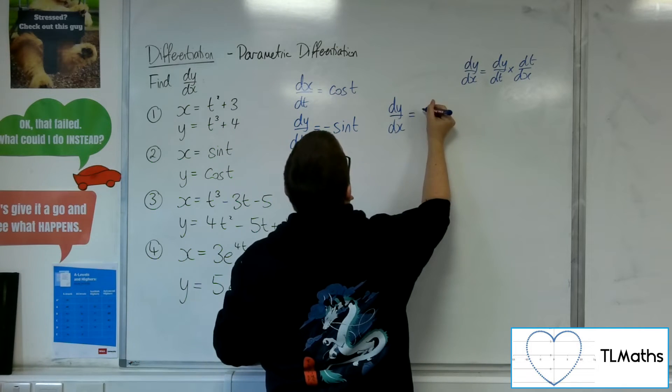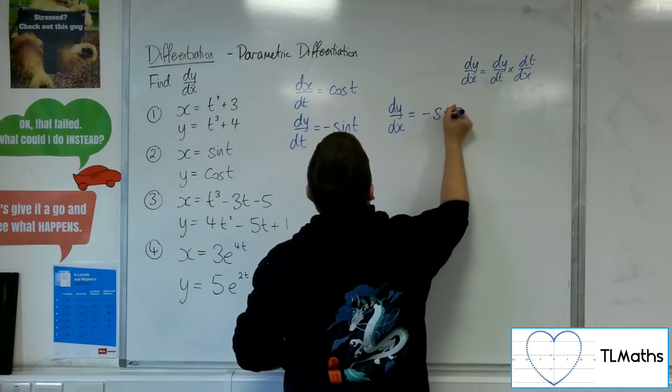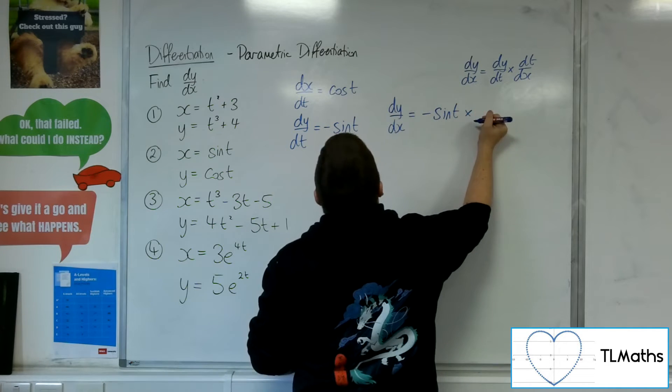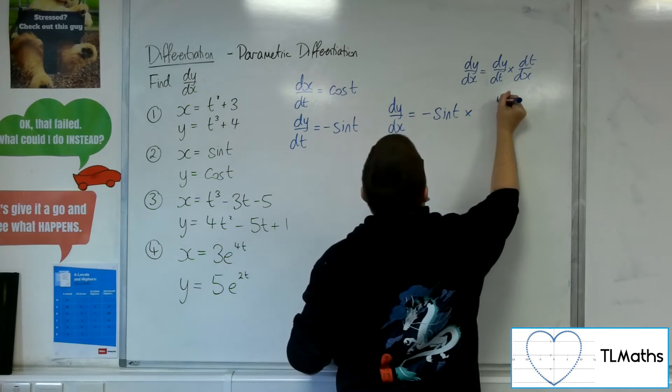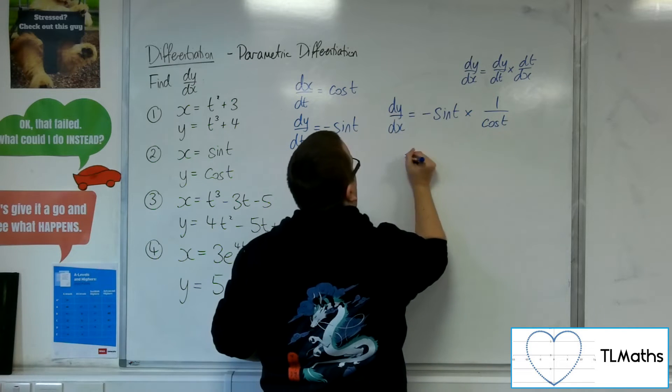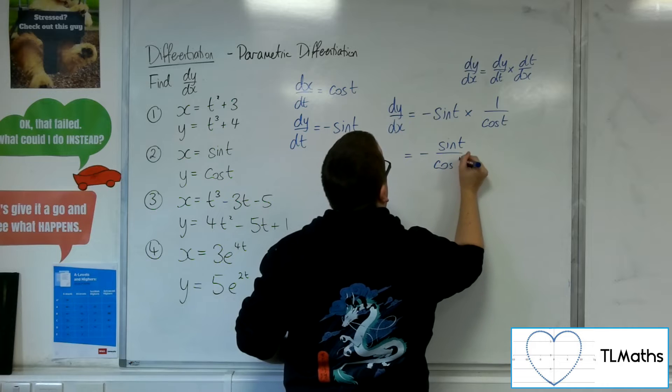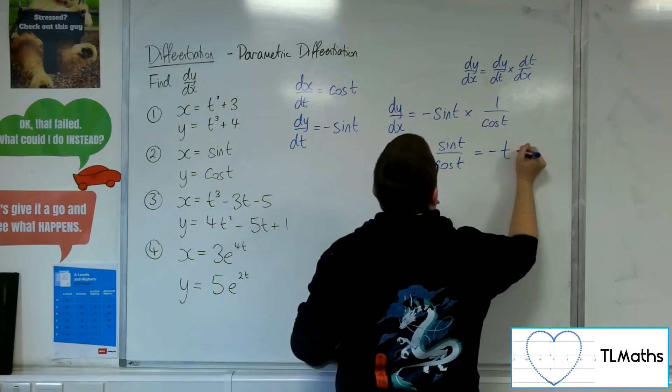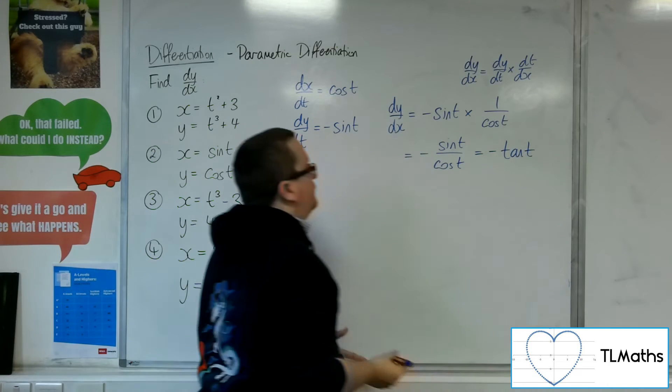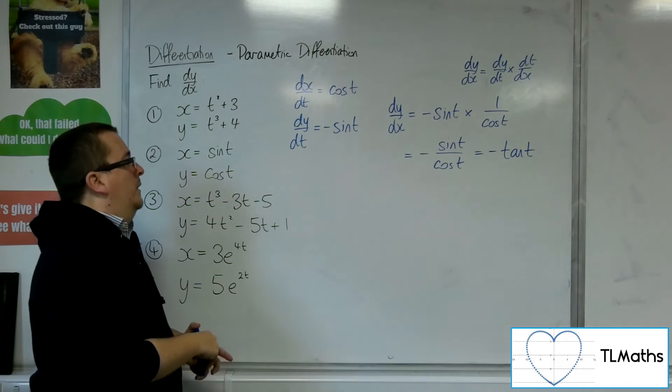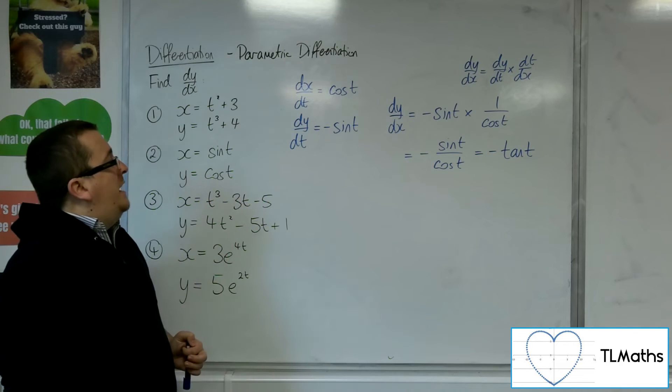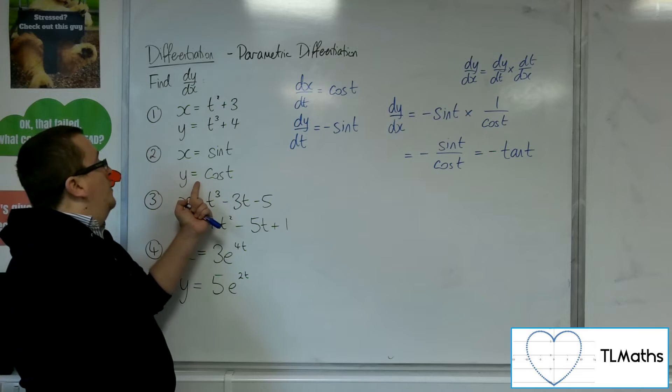So dy by dx is dy by dt times by dt by dx, which is 1 over cos t. So we've got minus sine of t over cos t, which is minus tan of t. So that is the gradient function for number 2.